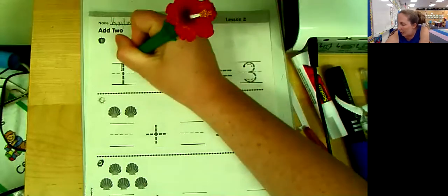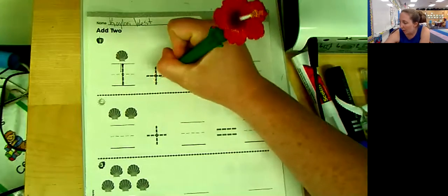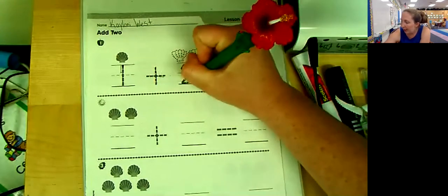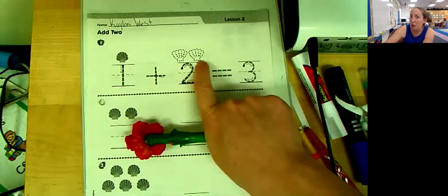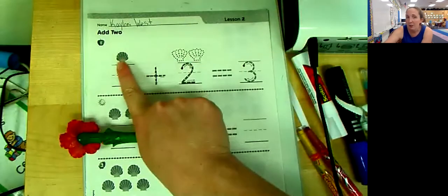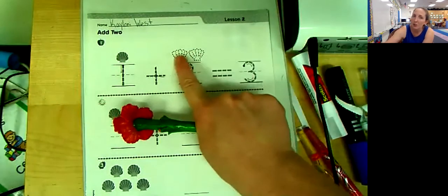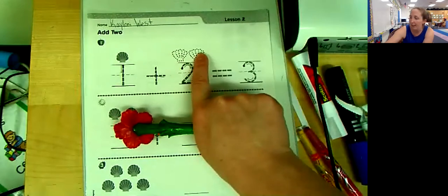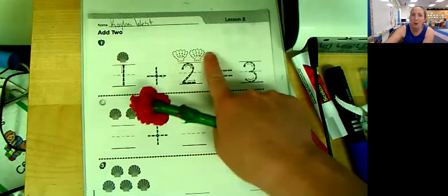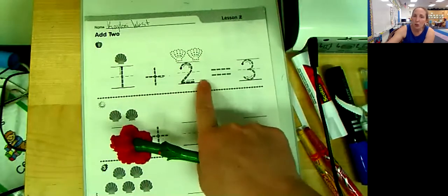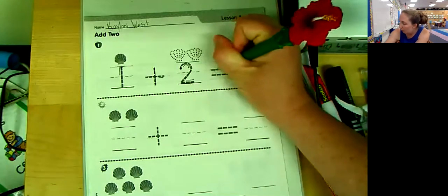So here we have one plus two, we're always going to do plus two. And then they kind of showed you that we could draw two shells to find the answer. So we have one shell and we're going to plus two more. We can add them all together: one, two, three. So one plus two equals three.